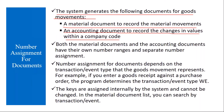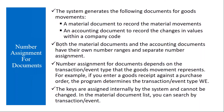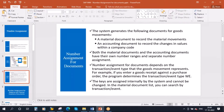Whenever we do any goods movement, it will generate a material document and also an accounting document. Both the material documents and the accounting documents have their own number ranges and separate number assignment. Suppose I go to the system to demonstrate this — let me take a material.